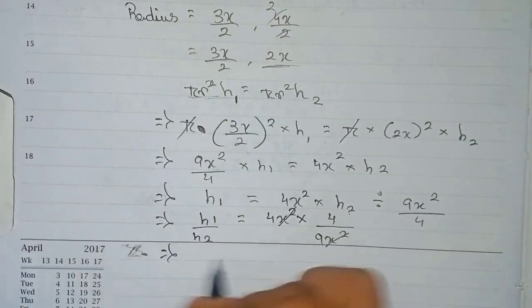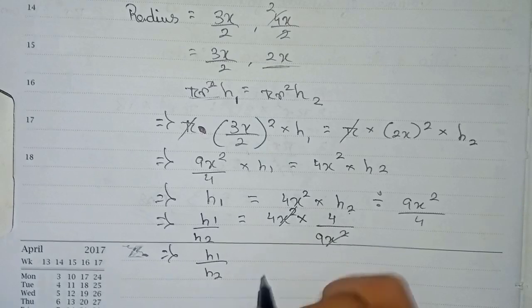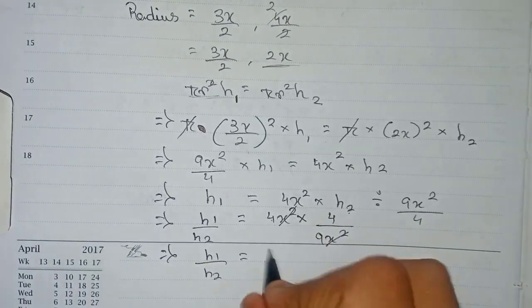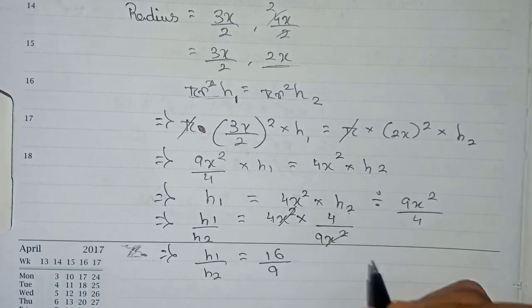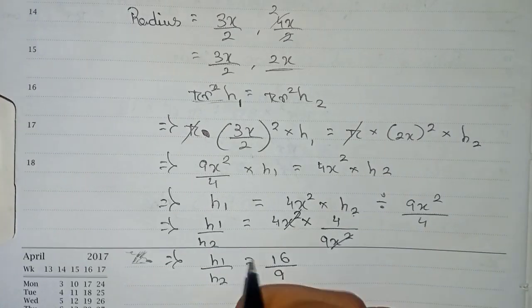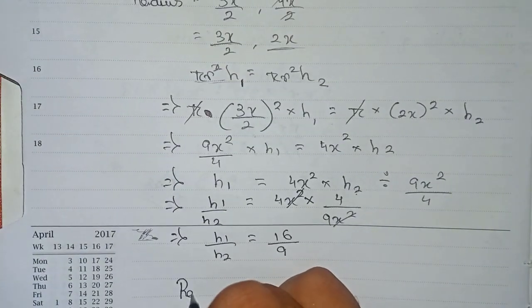So h1 by h2 will be 16 by 9. So h1 by h2 becomes 16 by 9. So we can write here that ratio of their height will be 16 is to 9.